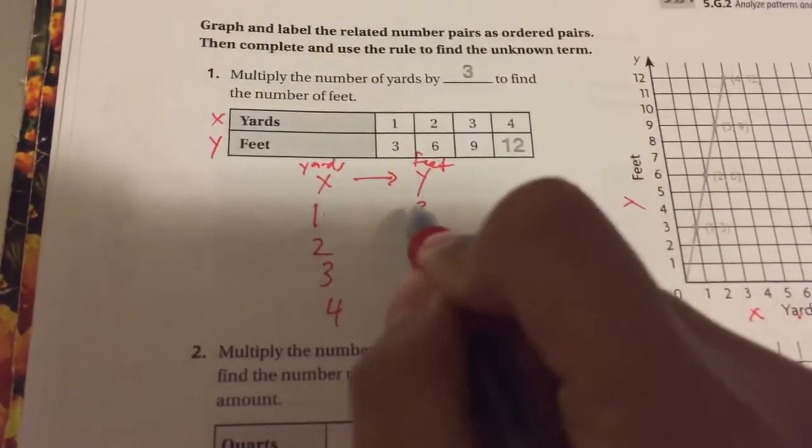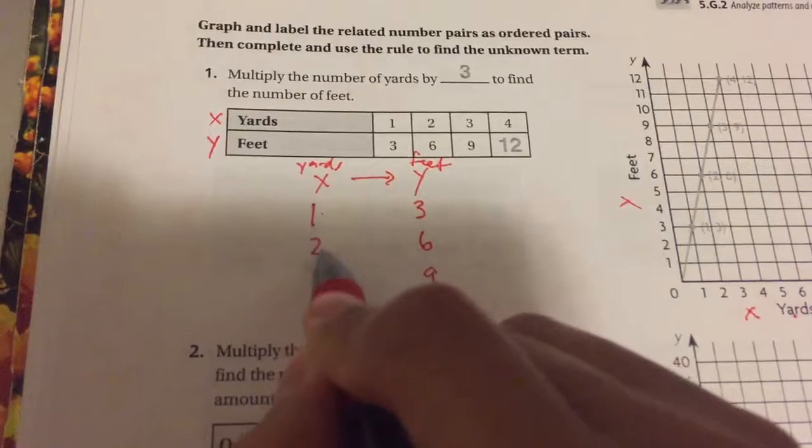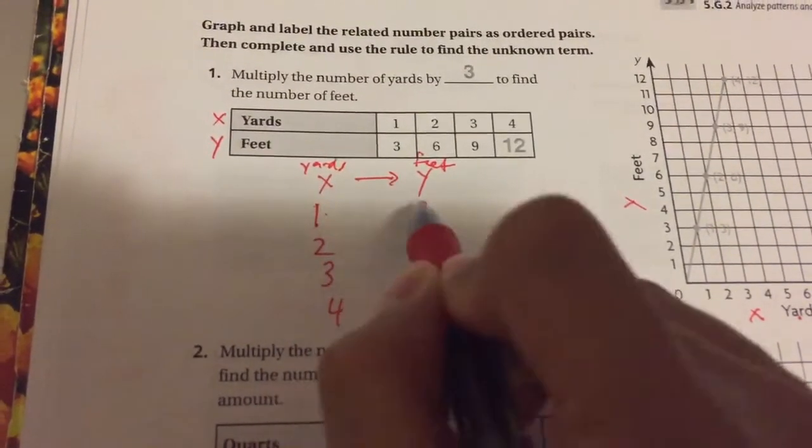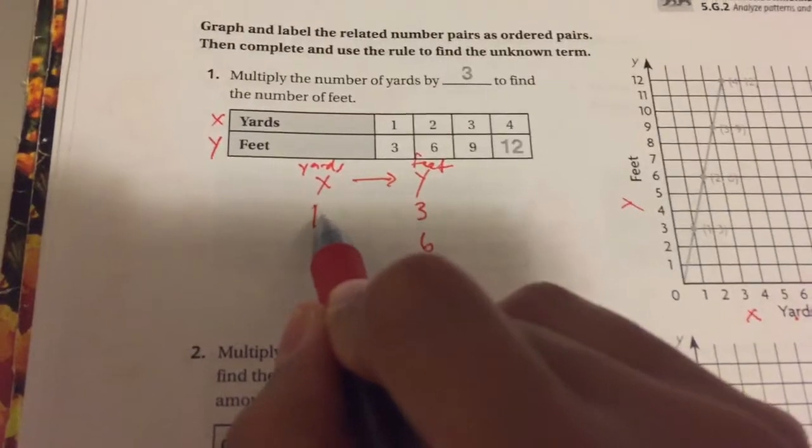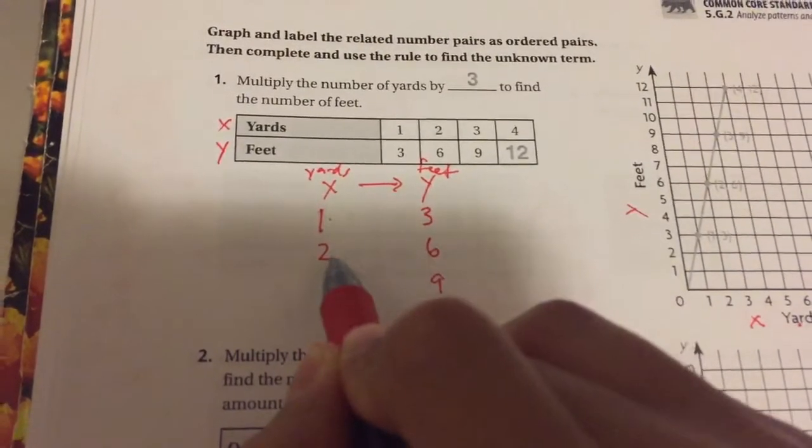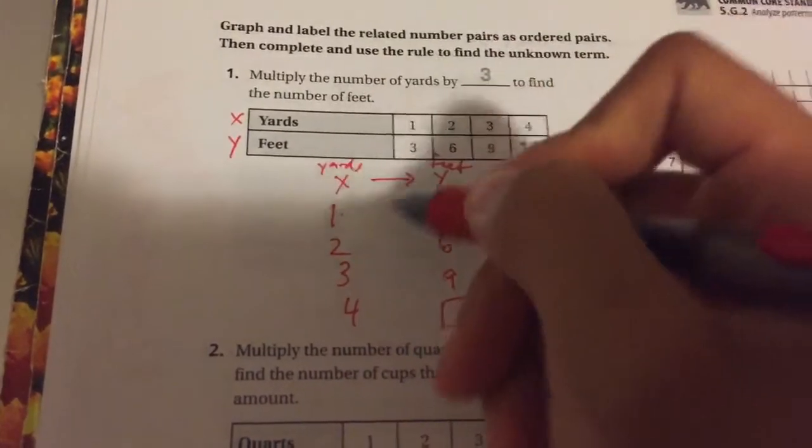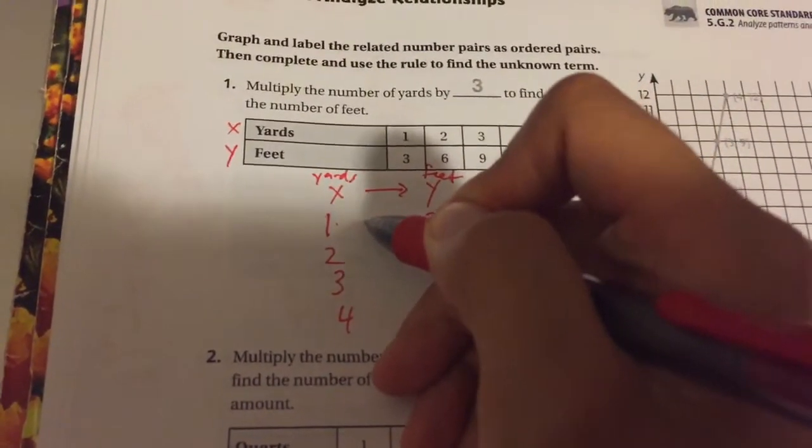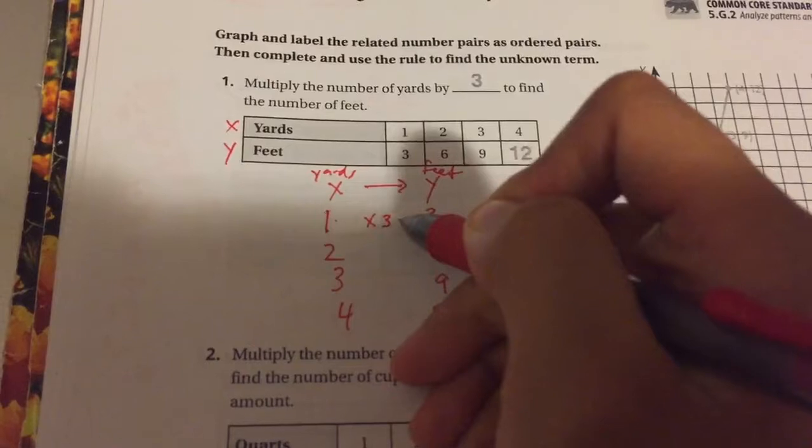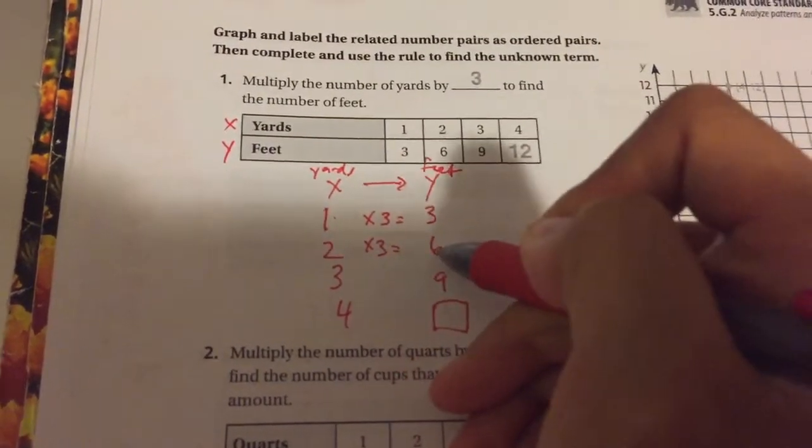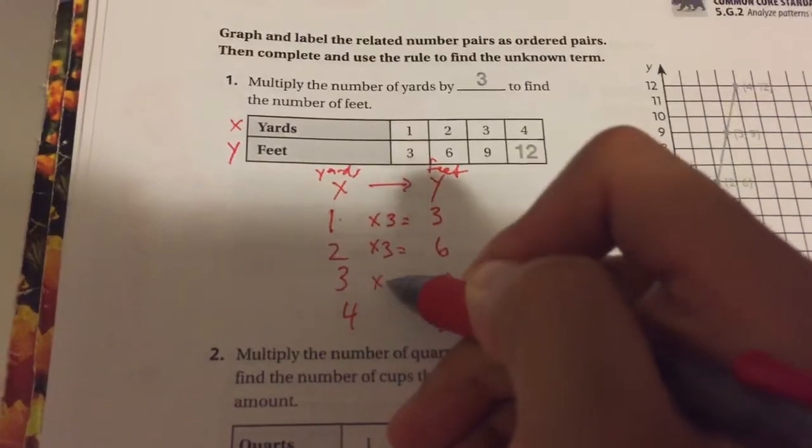So how do we get from 1 to 3 that also works for 2 to 6? Well, if we try, we can see that the number is getting bigger, so we're going to either add or multiply. Now if we do 1 plus 2 equals 3, 2 plus 2 equals 4, not 6, so addition won't work. So we'll try multiplication.